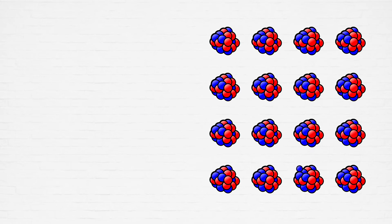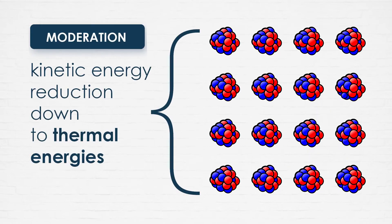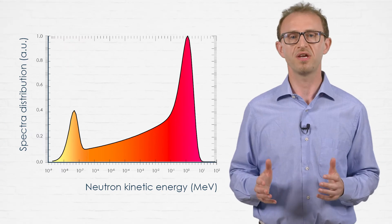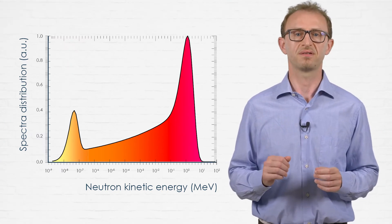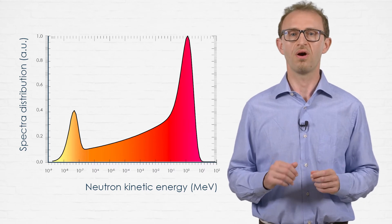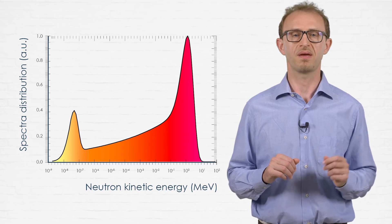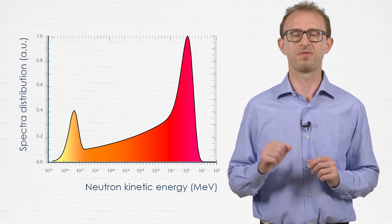The slowing down process, called moderation, ends when neutrons reach the minimum kinetic energy possible, the thermal energy. In real situations, the final effect of such a behavior is the coexistence in the neutron field of all kinetic energy components, from the maximum emission value down to the thermal one.